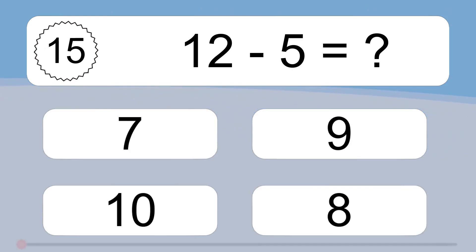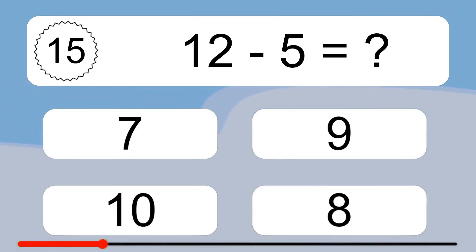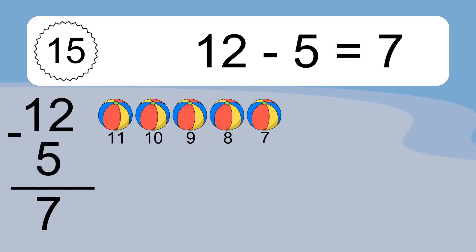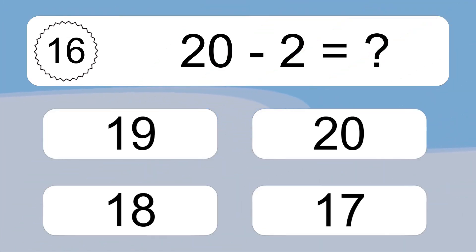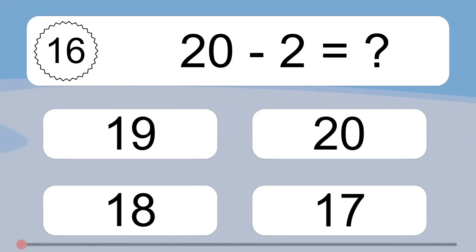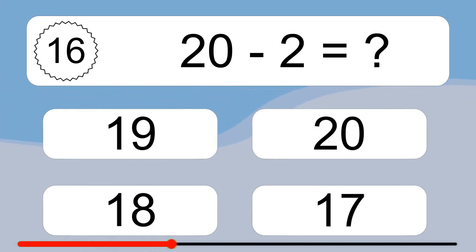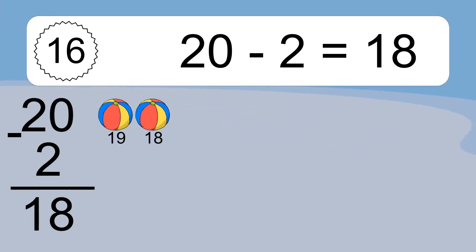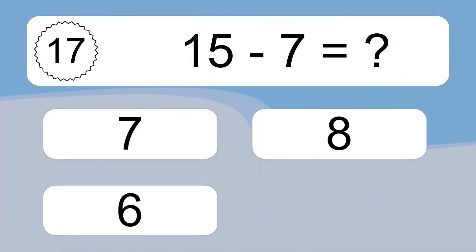12 minus 5 equals what? 12 minus 5 equals 7. Let's count it. 11, 10, 9, 8, 7. 20 minus 2 equals what? 20 minus 2 equals 18. Let's count it. 19, 18.